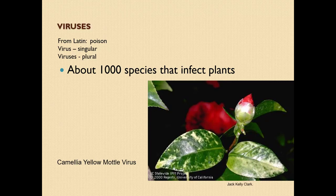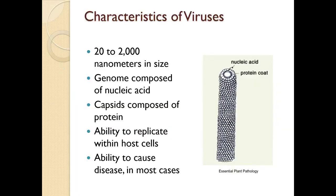There are about a thousand different species that infect plants. Here we have camellia yellow mottle virus, which several of you have used for your virus samples. They're quite small, 20 to 2,000 nanometers in size. There's a genome composed of nucleic acid, and capsids are composed of protein. They're able to replicate within host cells and have the ability to cause disease in most cases.